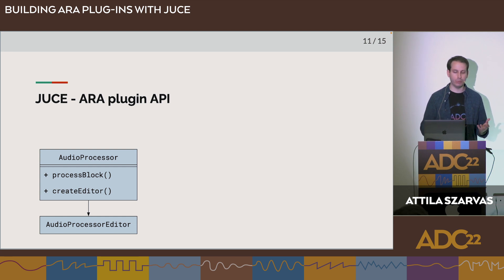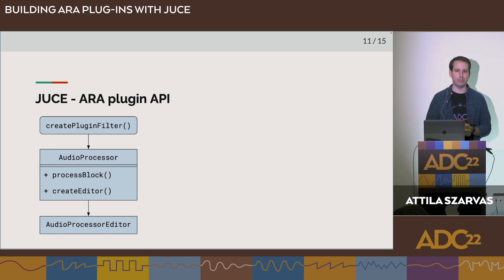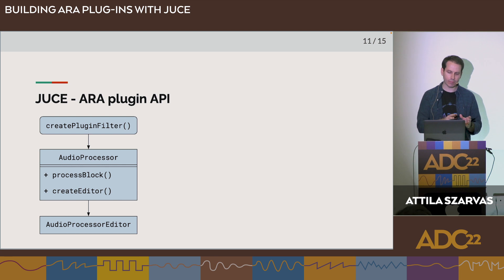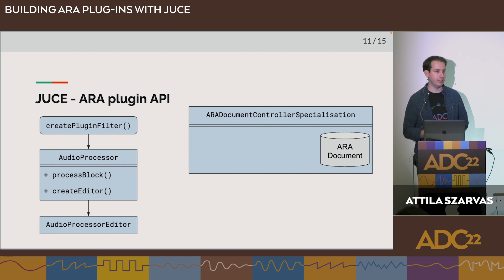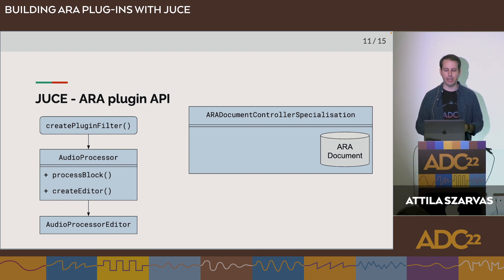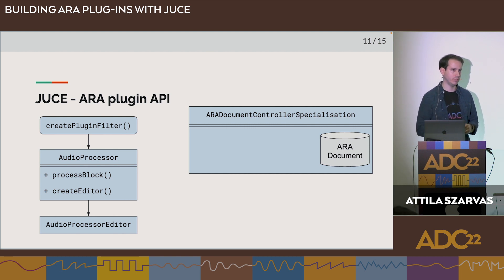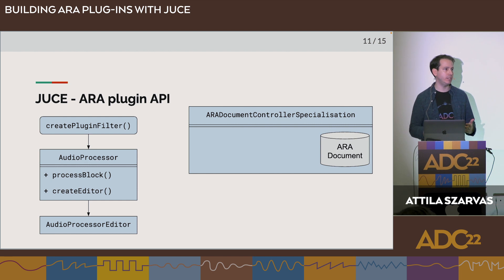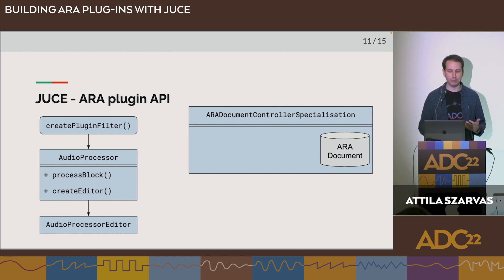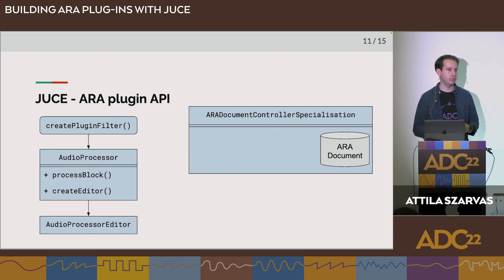Let's see what additions ERA brings. Central to every ARA plugin is the document controller. In JUICE, you implement your own document controller by inheriting from ARADocumentControllerSpecialisation. This document controller encapsulates the ARA document — the main model object that holds all information shared by the host and the plugin.